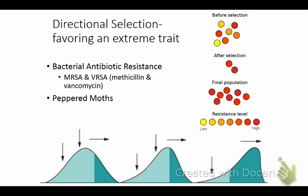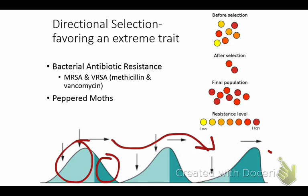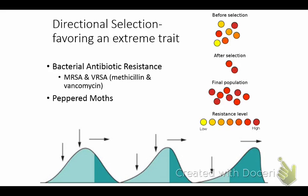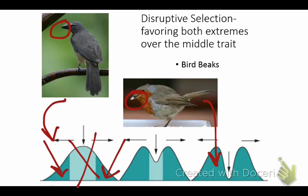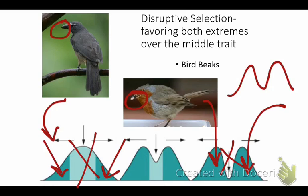Directional selection favors an extreme trait — just like the peppered moths. There were white moths and a few dark moths; pollution made the trees darker, so the dark moths increased and white moths decreased. Disruptive selection picks both extremes without the middle. A short beak is good for picking up seeds; a long beak like a pelican's is good for catching fish; but a medium beak can't compete at either, making it harder to survive and reproduce — so we see two peaks instead of one.